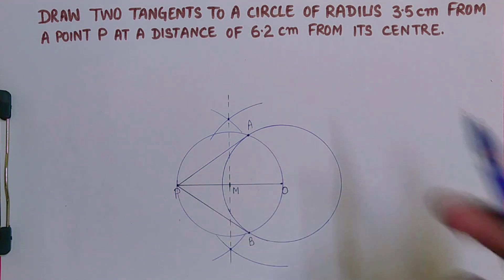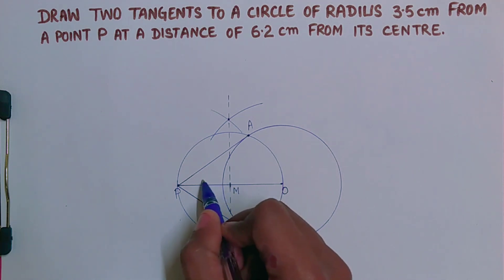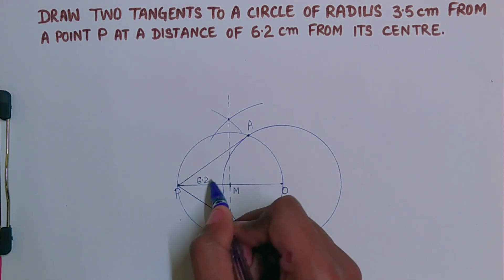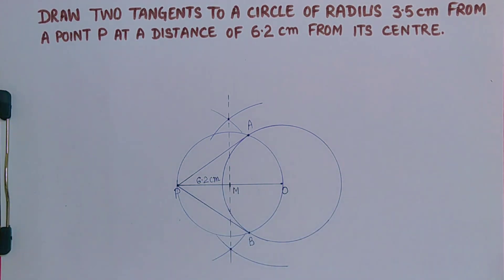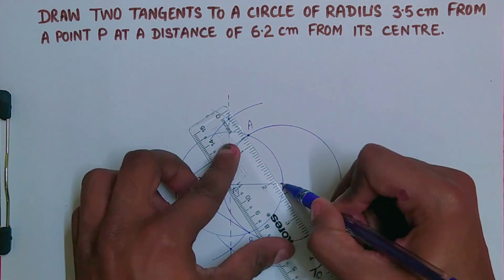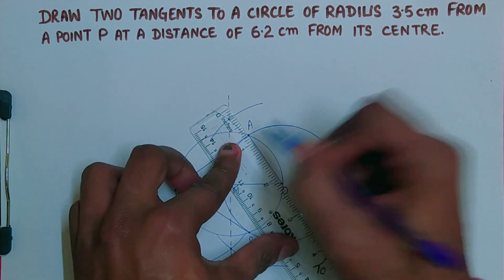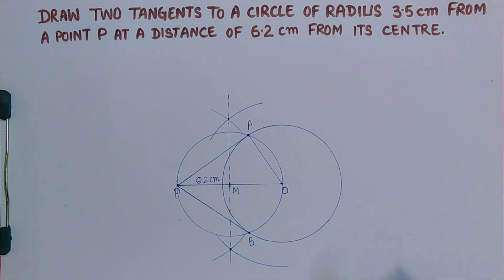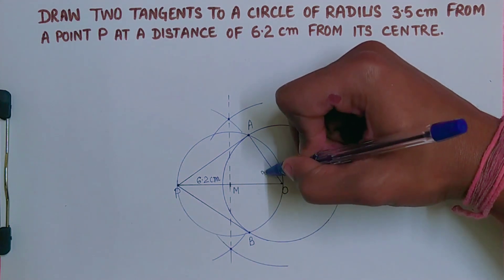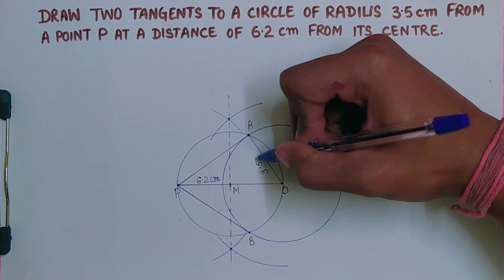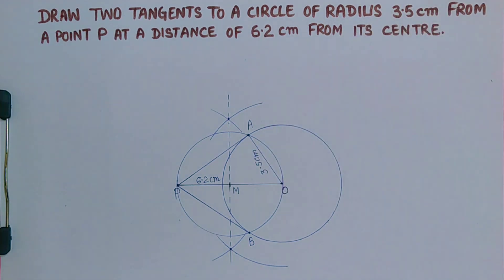You can write 6.2 centimeter or you can mention the radius if you want. Radius is 3.5 centimeter. Finished, thank you so much.